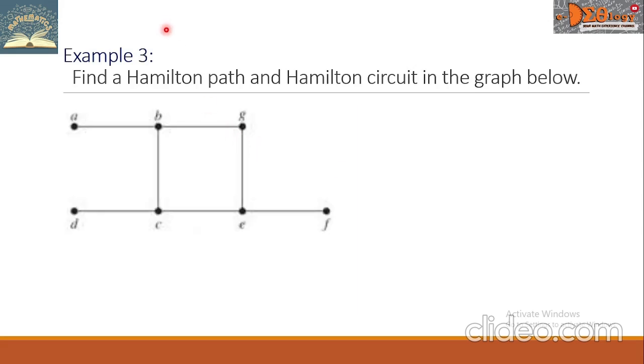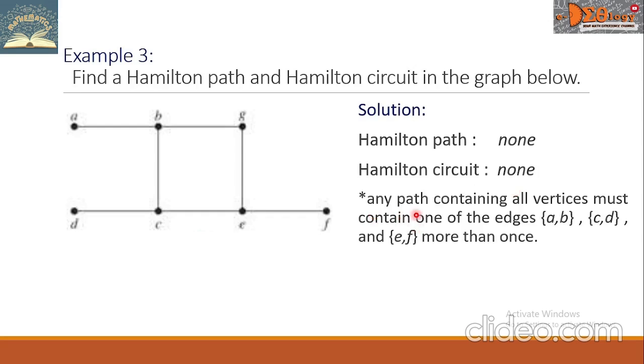Example 3. Find a Hamilton Path and Hamilton Circuit in the graph below, and this is our graph. For the Hamilton Path, there is none. For Hamilton Circuit, also, there is none. Any path containing all vertices must contain one of the edges AB, CD, and EF more than once.